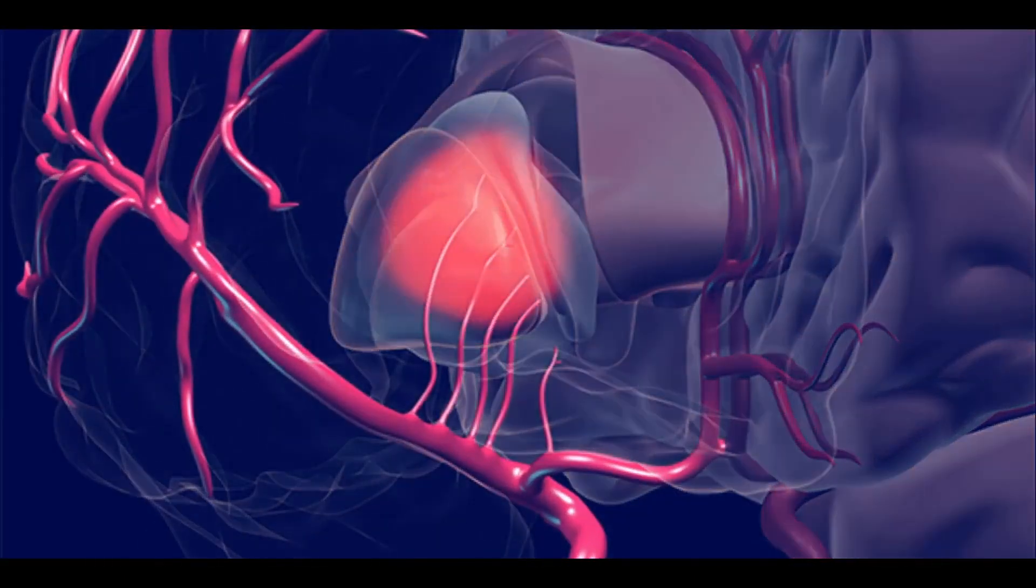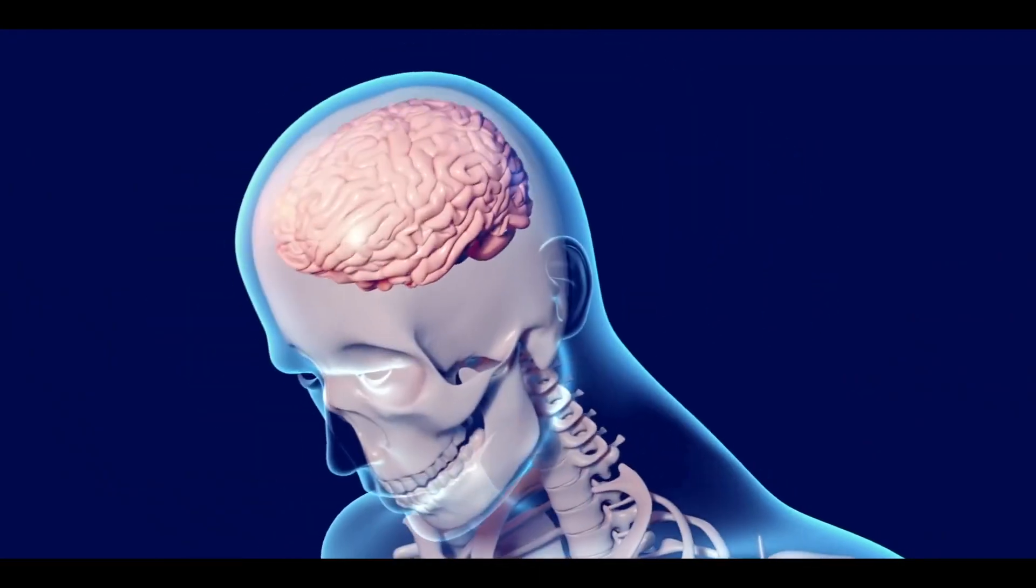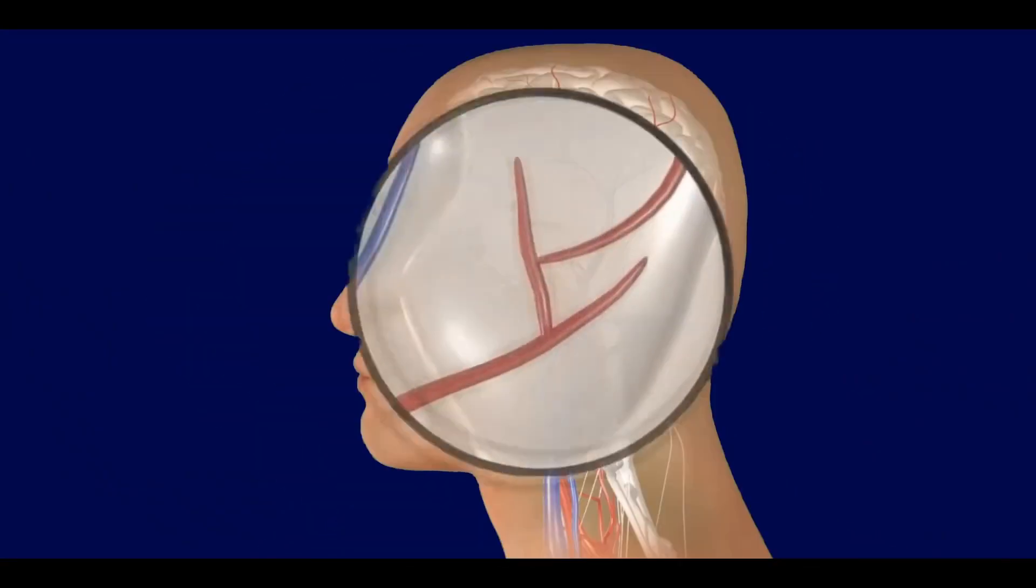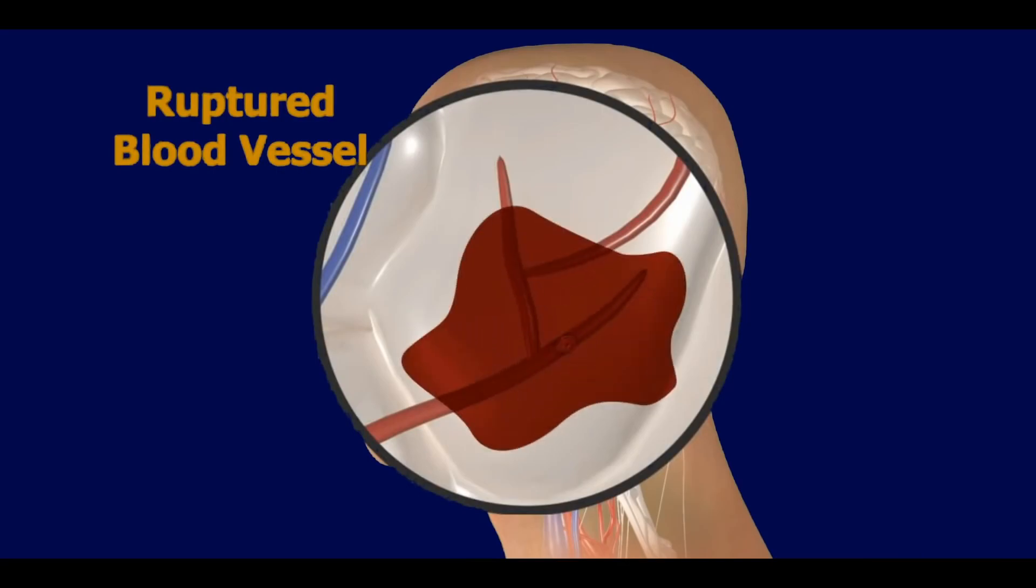causing death of brain cells. There can be many causes of bleeding in brain, such as severe injury to head, blood vessels rupture due to high blood pressure, brain tumor, or certain bleeding disorders.